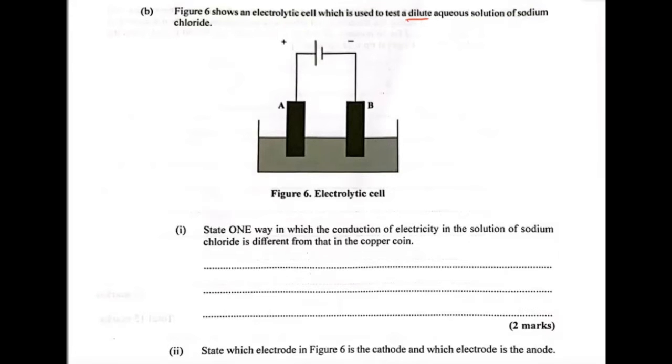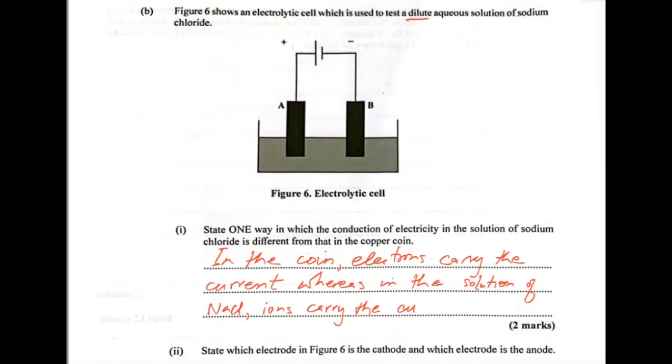So in the coin, electrons carry the current, whereas in the solution of NaCl, the ions carry current in migrating to the oppositely charged electrodes.